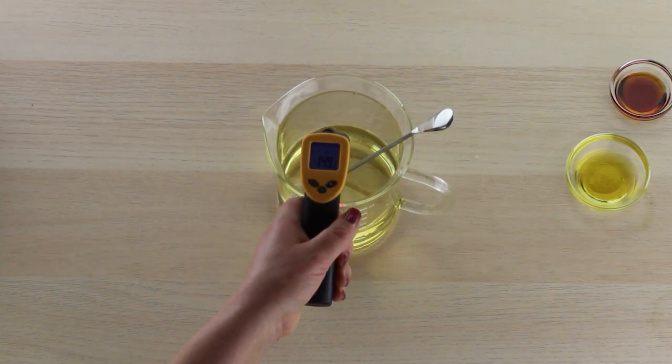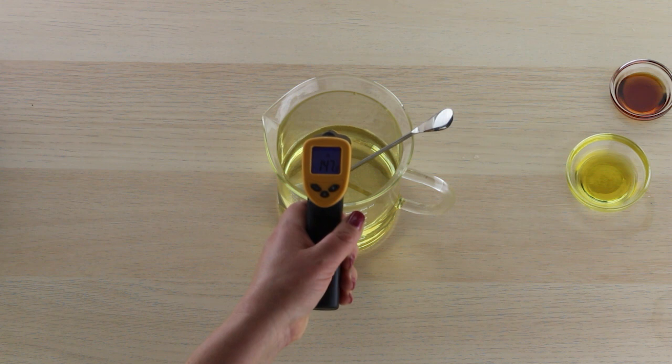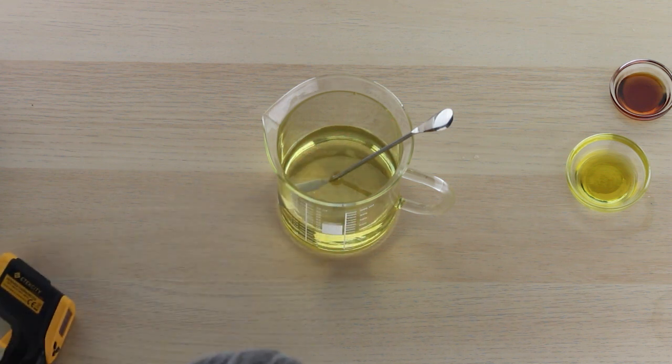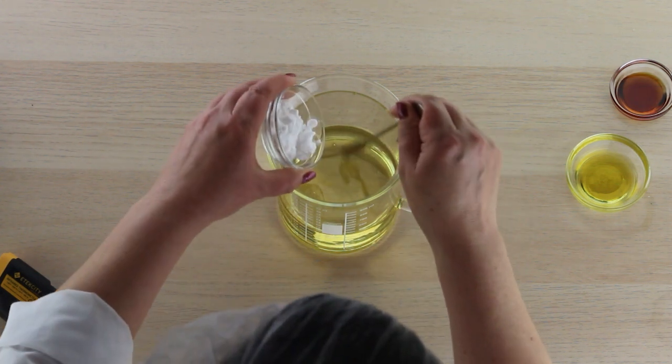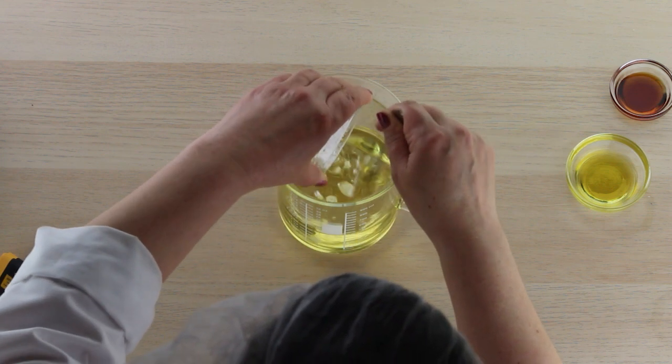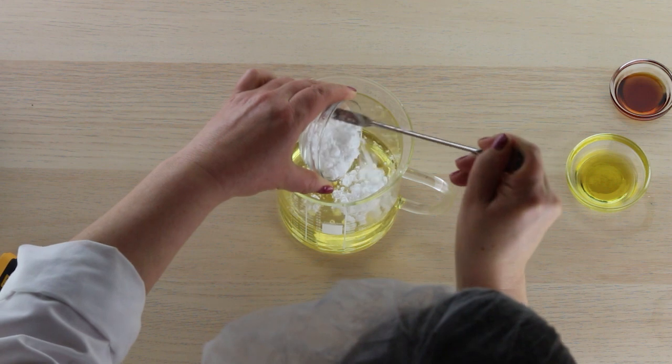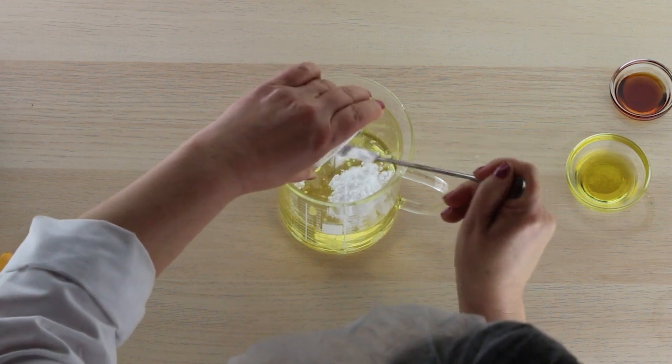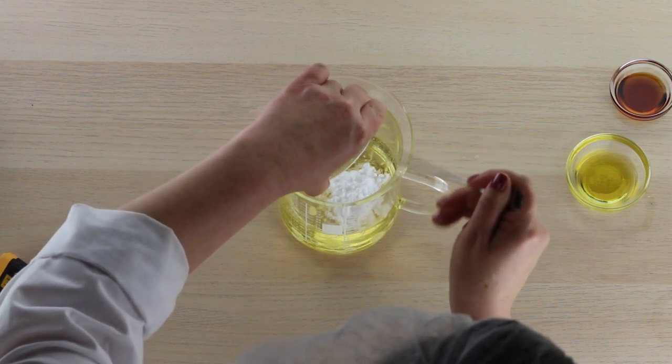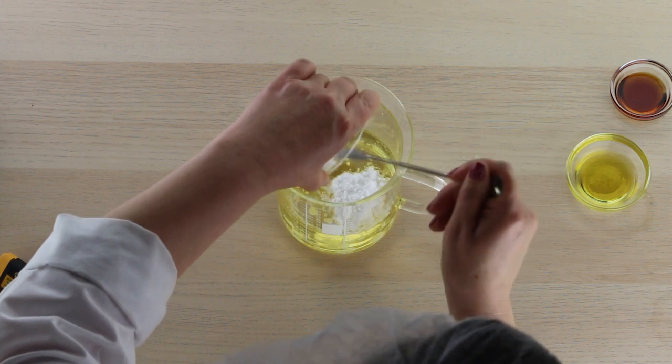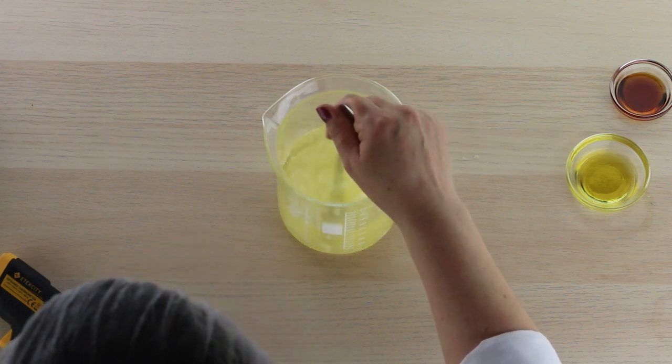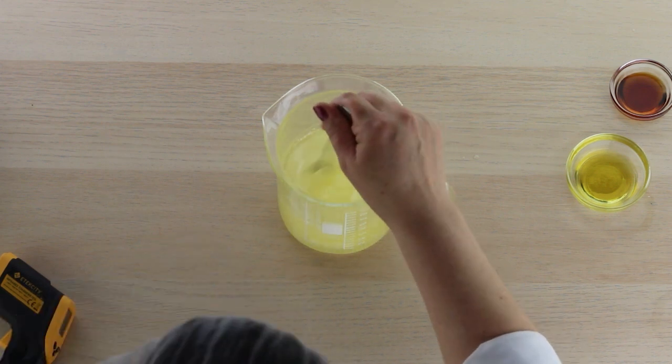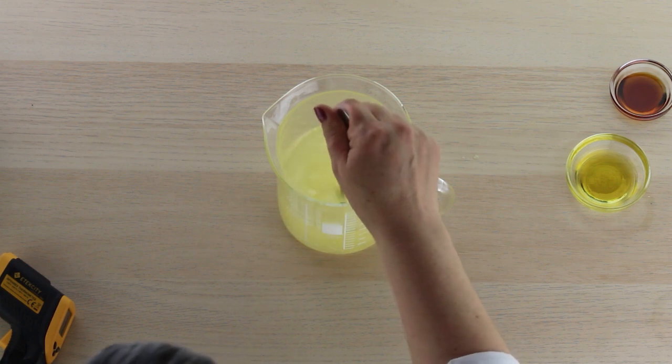So we've heated our oil and I went a little bit above 125. Actually, it looks like hovering around 150, so that's just fine. Now I'm going to add the salicylic acid powder and stir while I'm adding. The reason that we're adding salicylic acid is it's a really great beta-hydroxy acid. You'll see it in a lot of products for problem skin.